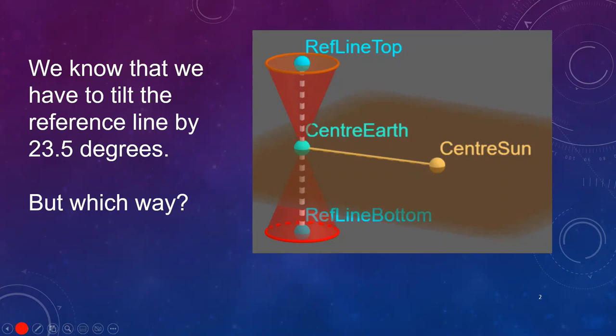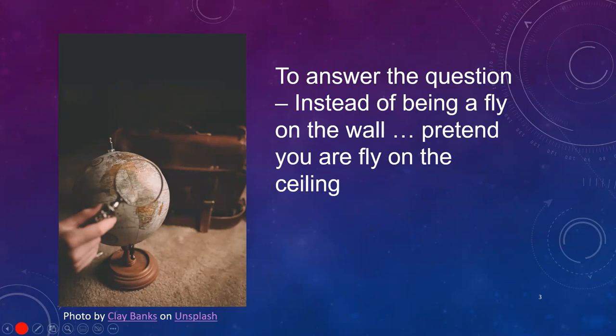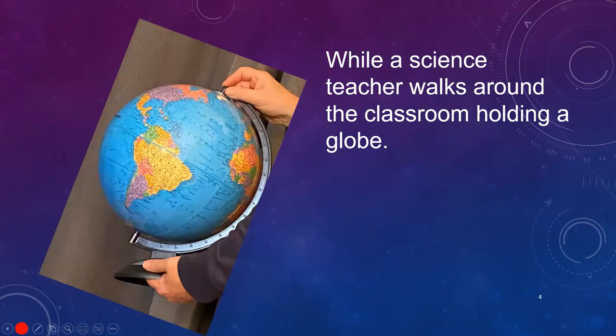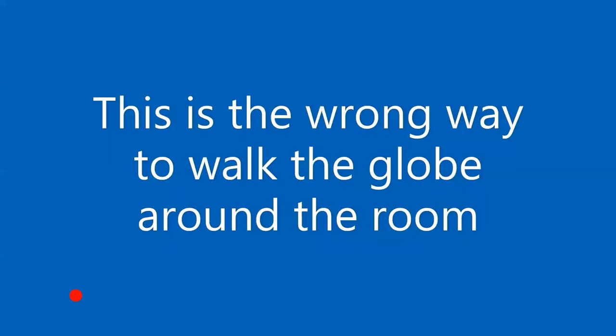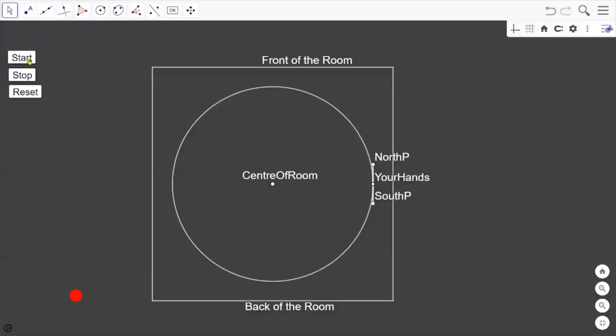We know that we have to tilt the reference line by 23.5 degrees, but we're not sure which way. To answer that question, instead of being a fly on the wall, we're going to be a fly on the ceiling while we watch a science teacher walk around the classroom holding a globe.